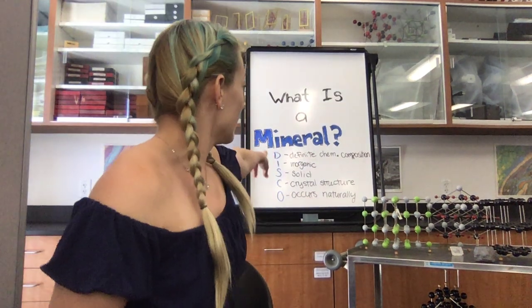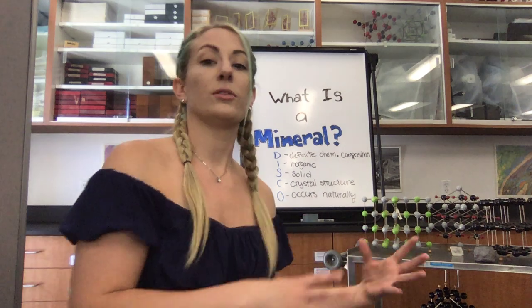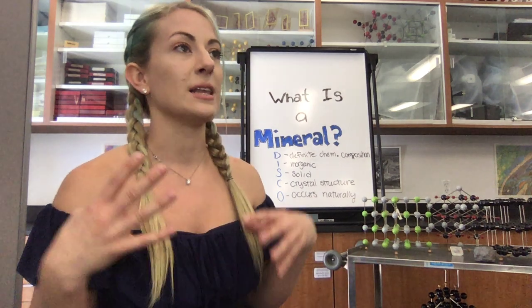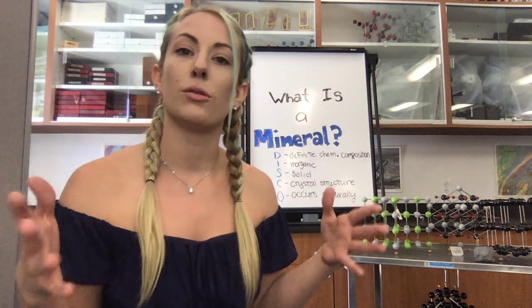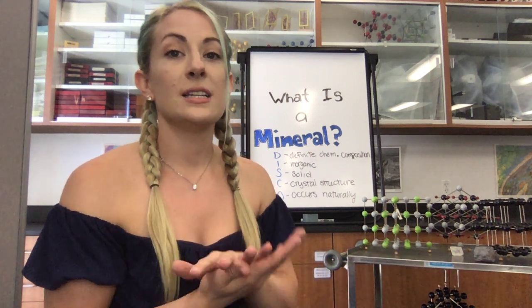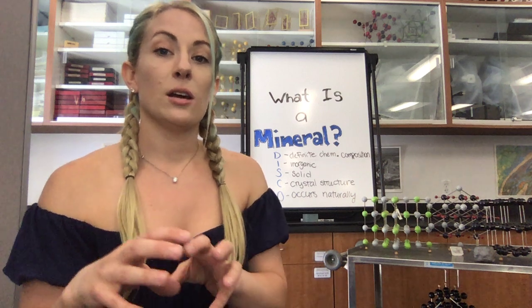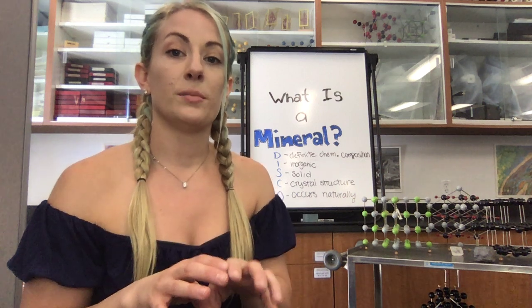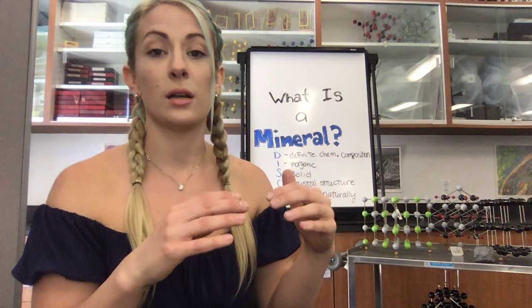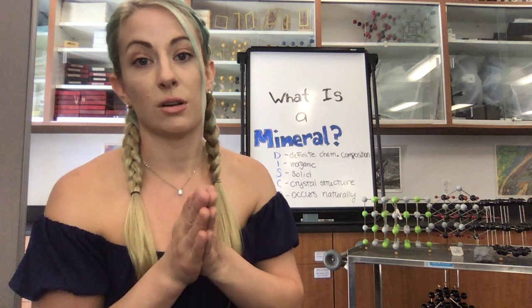The next letter is I, which stands for inorganic. Although we can use organic in a lot of different realms — like in whole foods it might mean no pesticides or no special hormones added — when you get into the sciences, organic has a different definition. Depending on which subject you're in, organic can mean that it has carbon and carbon bonds or carbon and hydrogen bonds. That would be more of the chemistry or geochemistry definition of organic.